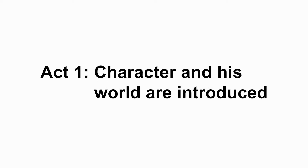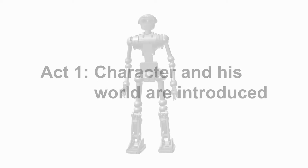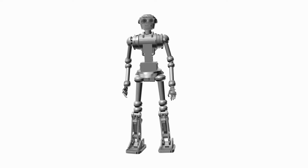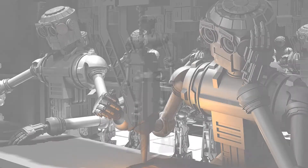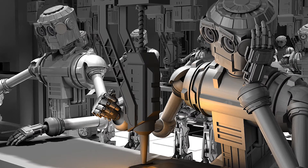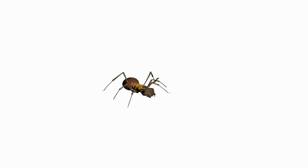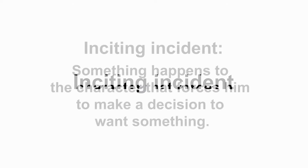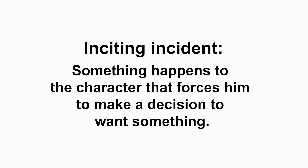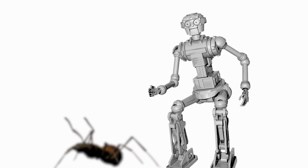Act 1 is when the character and his world are introduced — in this case, our robot. The robot lives in a drab and cold world and works in a factory. One day, however, he sees a little ant. This is called the inciting incident — something happens to the character that forces him to make a decision to want something. In this case, he decides to pursue the ant to learn more about it.